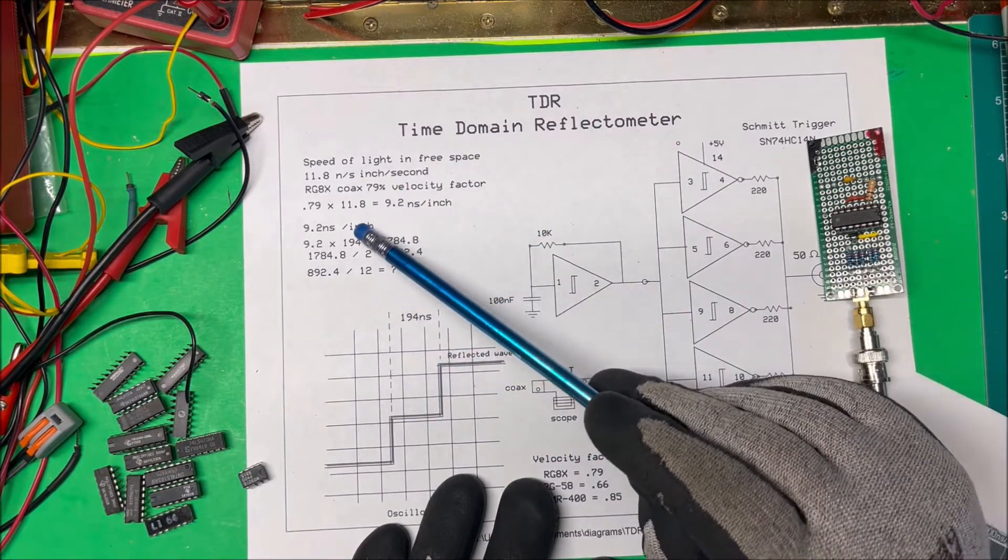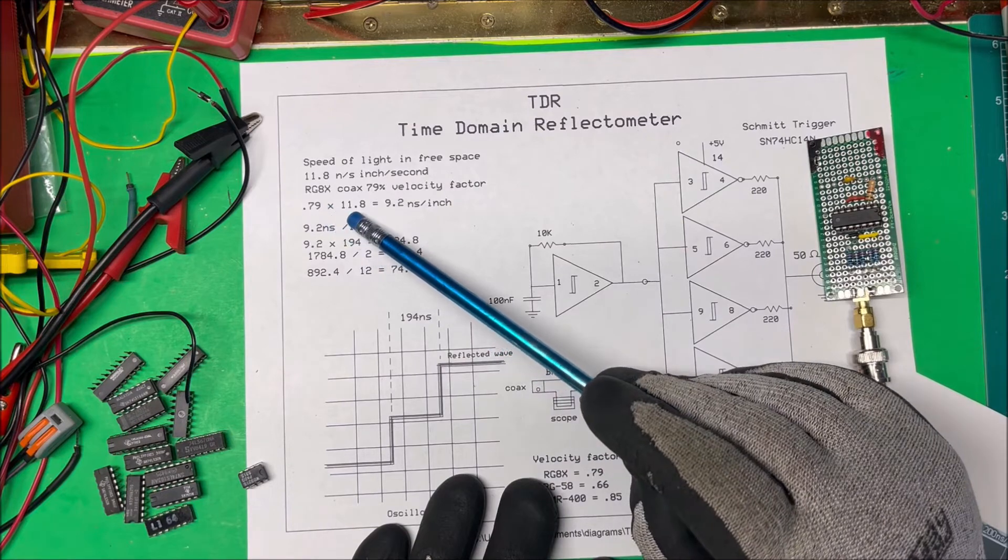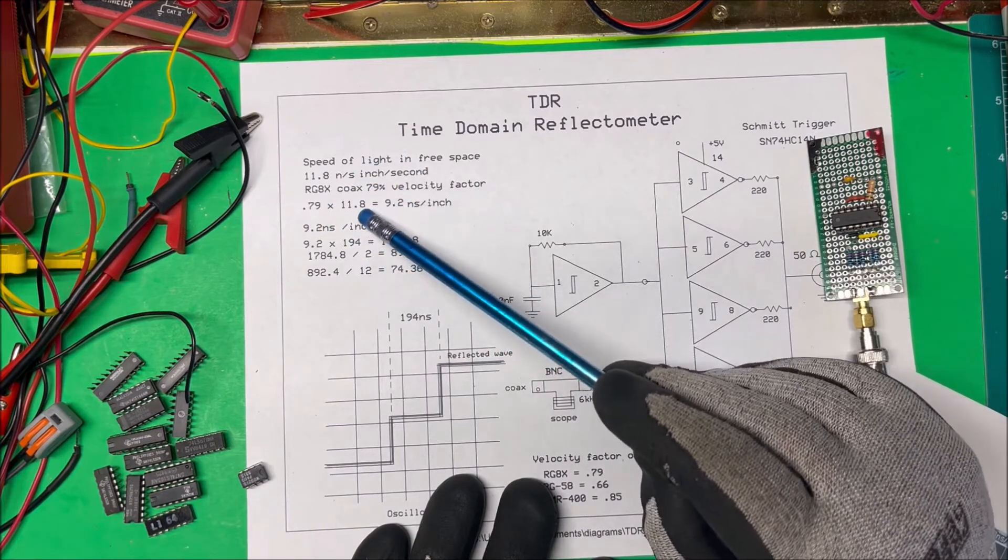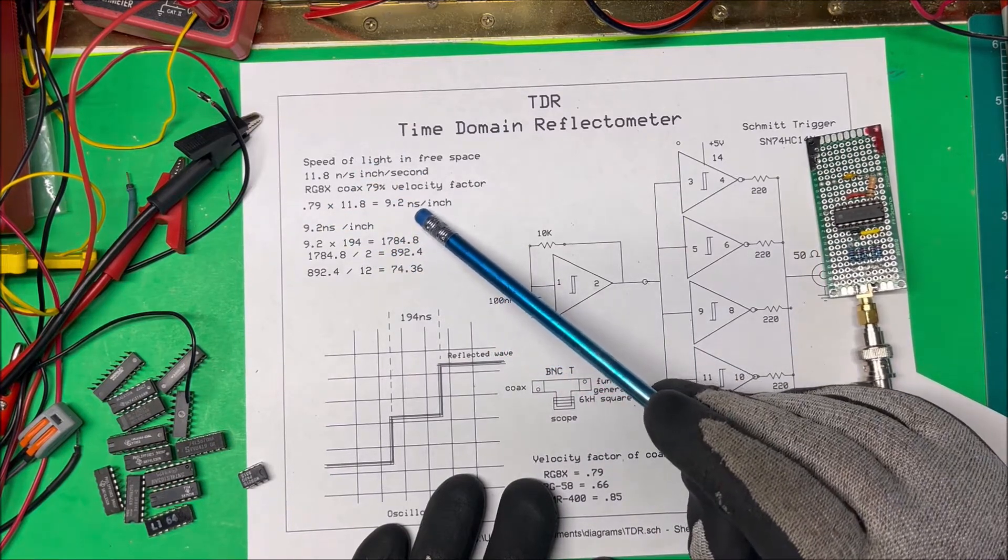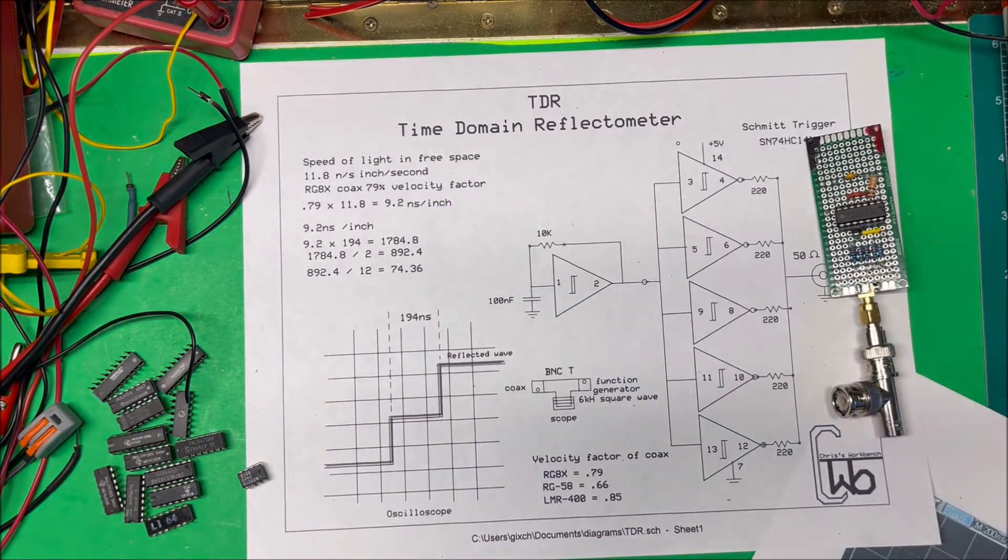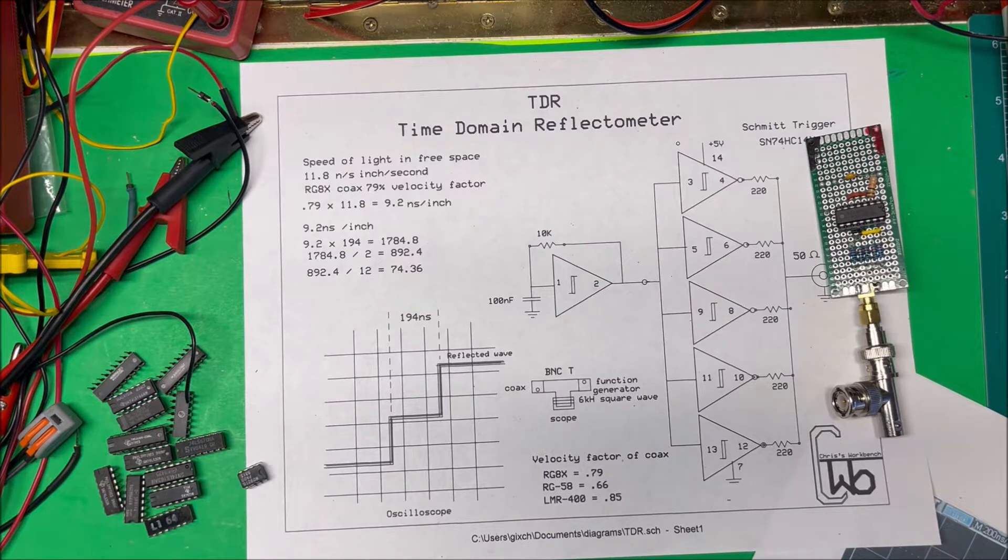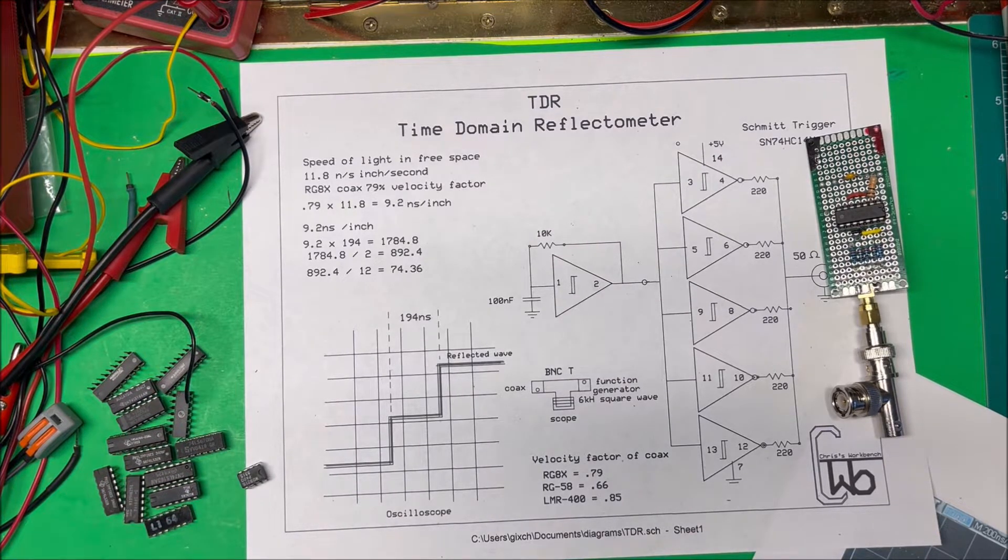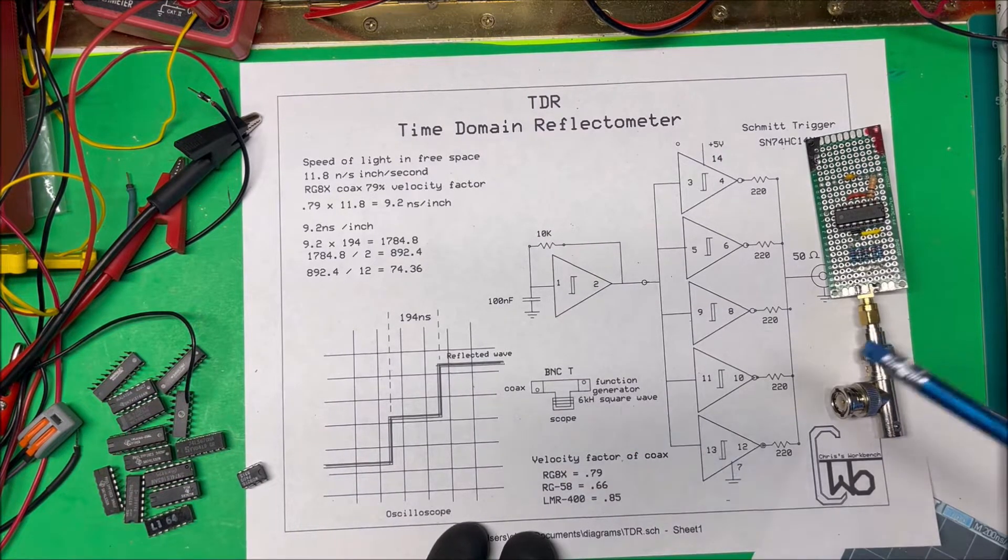So what we're going to do, we'll send a signal down to the cable, we'll monitor the reflected signal coming back and we'll get the time difference between it.